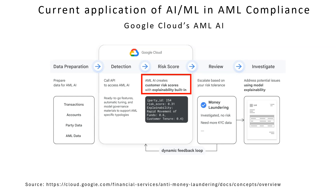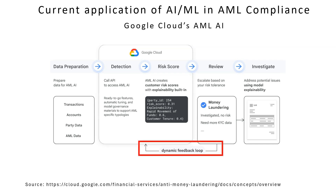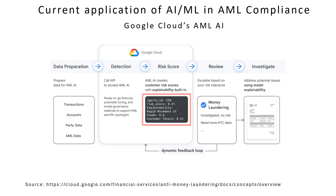The compliance team reviews the high-risk cases, and based on the action taken by them, a feedback loop fine-tunes the model to adjust itself to be more and more accurate. Another very important factor is the explainability of the risk score — why a transaction has been flagged and what parameters have been considered to create the weighted risk score.